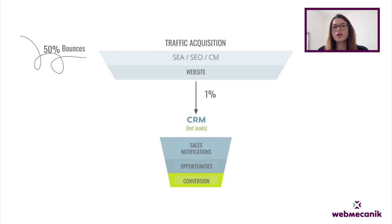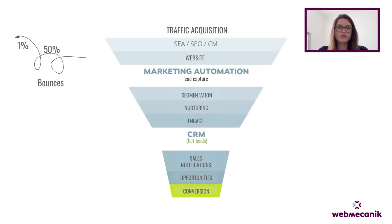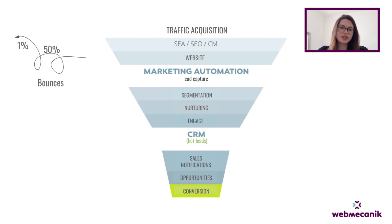How can you make the most of those 49% of visitors who do not convert on your website? Let's assume that one out of two visitors arrived there by mistake — those are the bounces. This leaves us with half of the visitors minus the conversion percentage, meaning about 49% who are interested. That's where a marketing automation strategy will help us — by creating automated workflows with different actions to cover each step of the sales funnel: segmentation, nurturing, engagement, and the post-purchase actions.